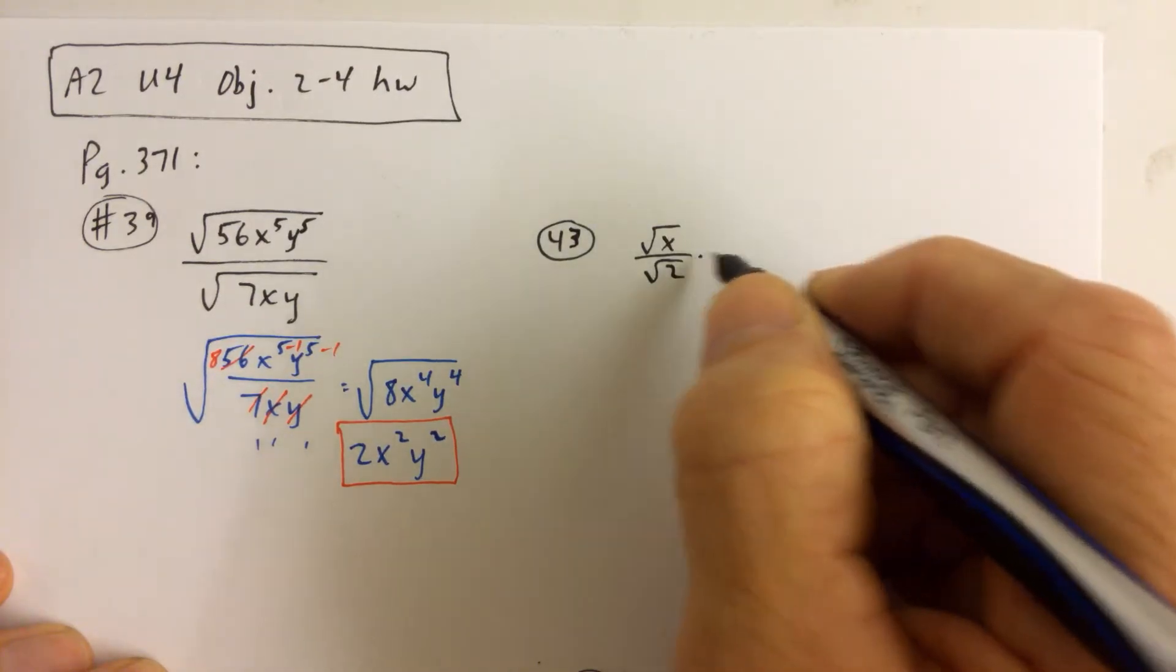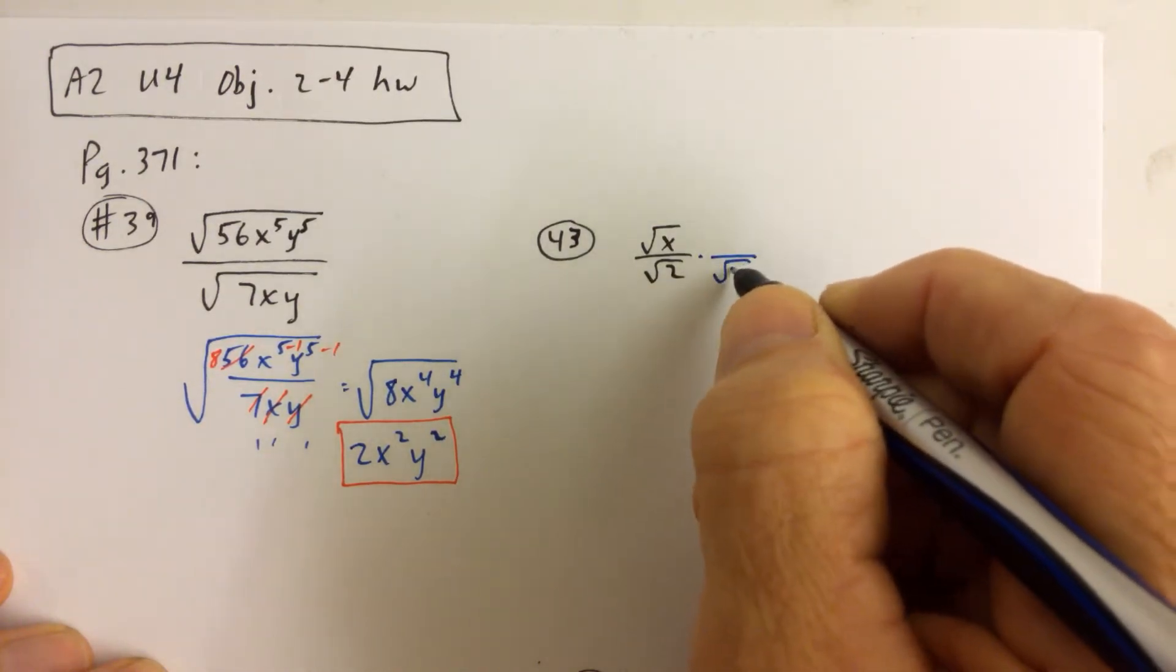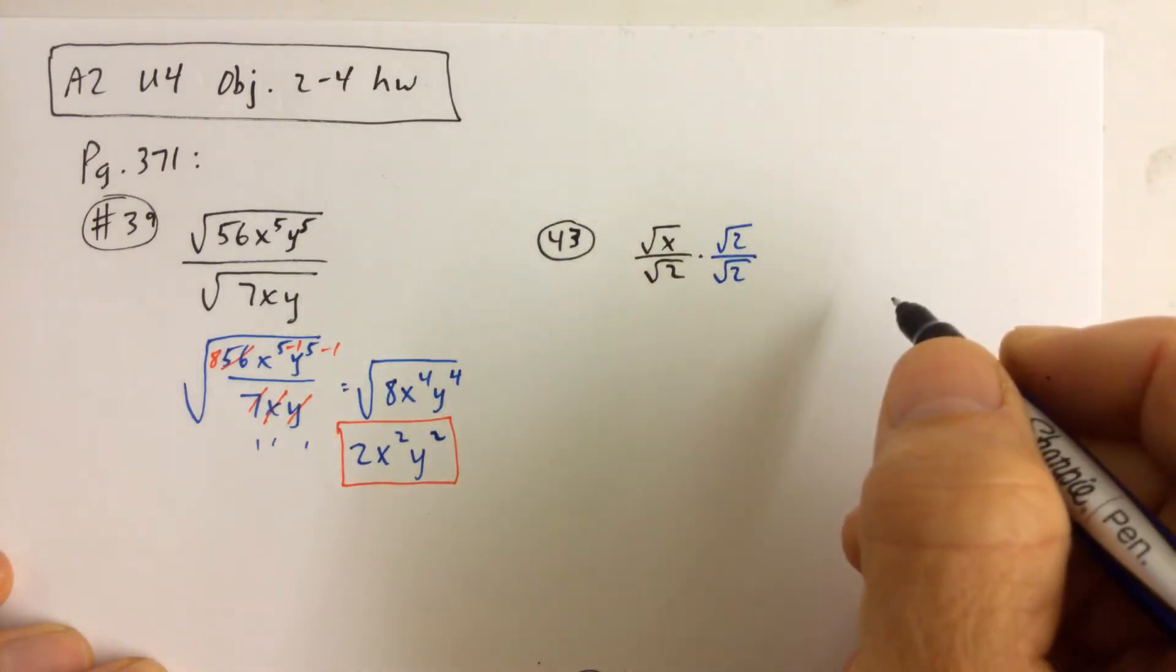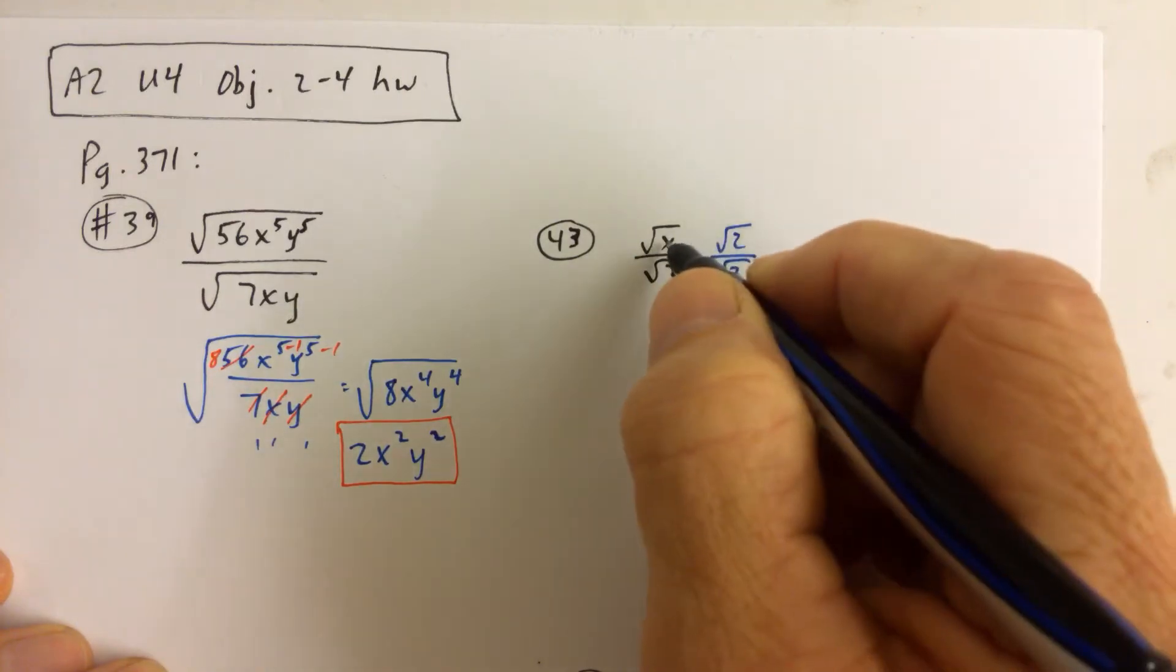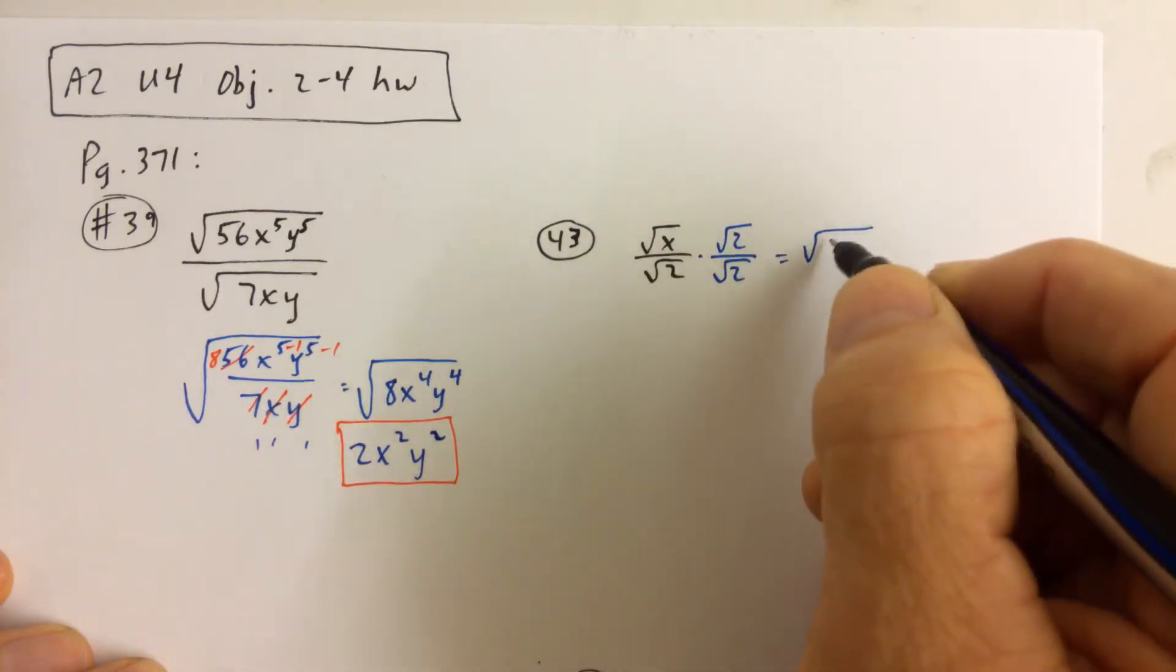So the bottom line is, what we want to do here is we want to rationalize the denominator. So we're going to multiply top and bottom by the square root of 2. And what ends up happening is, in the numerator, the square root of x times the square root of 2 is the square root of 2x.